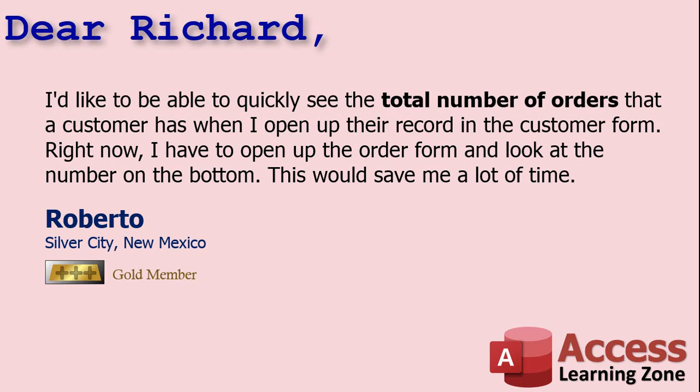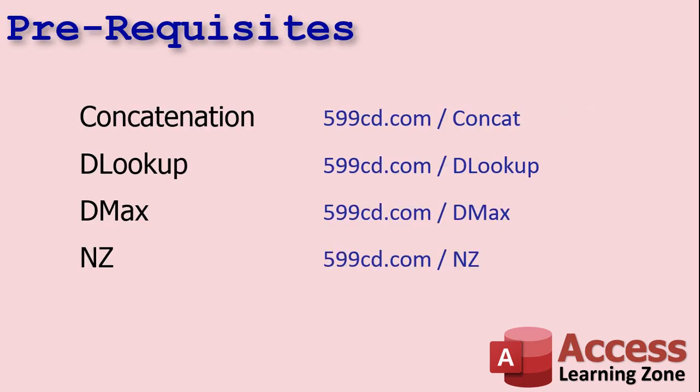We're going to use a nice simple little function called DCount to count the number of orders and display it on the customer form. Before we get into today's lesson, I have some prerequisites for you — go watch these other videos: Concatenation, that's putting two strings together; DLOOKUP, which is the father of all the D functions — D stands for domain. There's DLOOKUP, DMAX, DMIN, and DCOUNT, which we're going to learn today. Go watch DLOOKUP at least first. Also watch the NZ function, which covers converting a null value to zero.